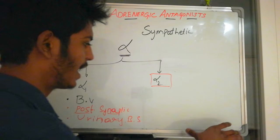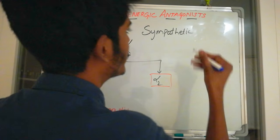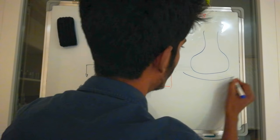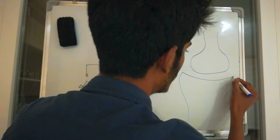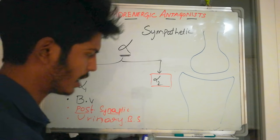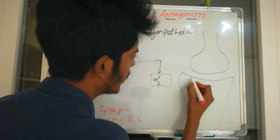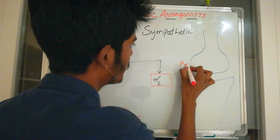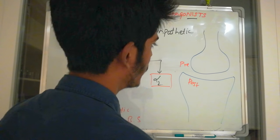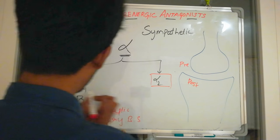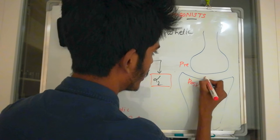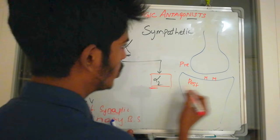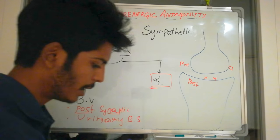Let's take a nerve ending forming a synapse with another nerve — this is part of the sympathetic nervous system. This here is the post-synaptic membrane, this is the pre-synaptic membrane, and we have the synaptic cleft. Alpha 1 adrenoreceptors are located on the post-synaptic membrane, while alpha 2 is located on the pre-synaptic membrane.